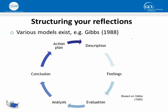Knowing where to start with reflective writing can be a challenge, but thankfully there are various models that can be used to help provide you with a structure for your reflections. One of the most commonly used models was identified by Gibbs in 1988 and, as shown in the diagram, this model guides us through the various stages of the reflective process. Each of the stages shown can represent different sections of a reflective account, so the writer starts with a description of an experience and works the way round finishing their account with an action plan.